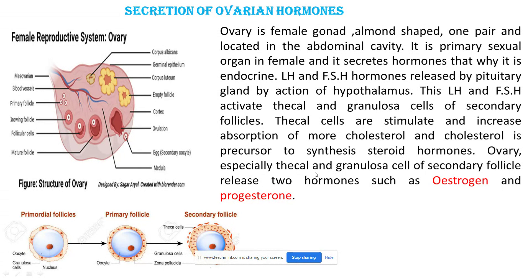Specifically, the thecal cells and granulosa cells of the secondary follicle release two hormones: estrogen and progesterone. These two hormones are very important and are released from the ovary. Both estrogen and progesterone are classified as steroid hormones.